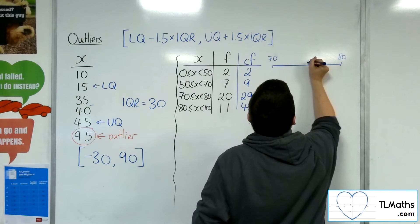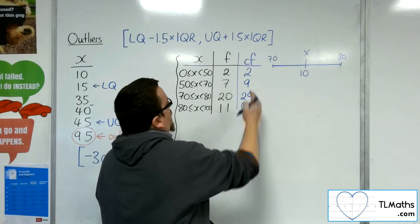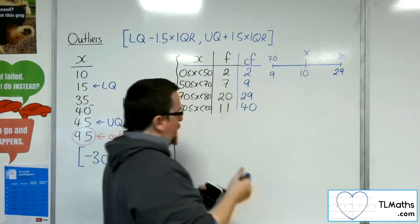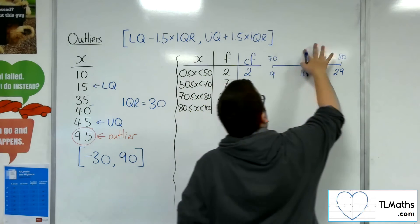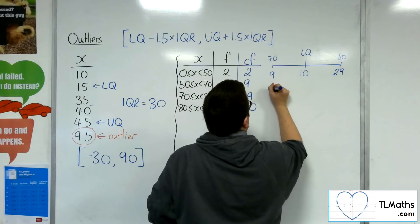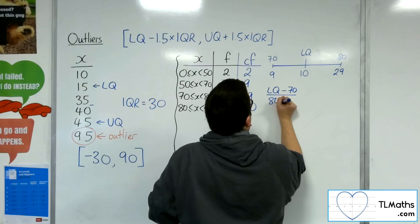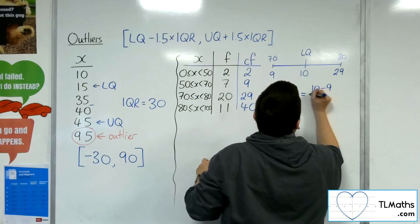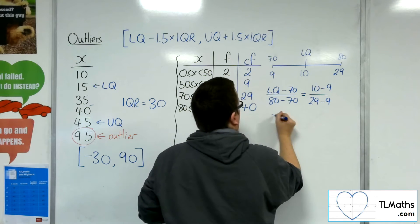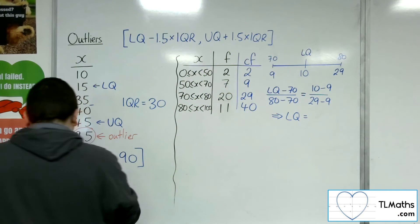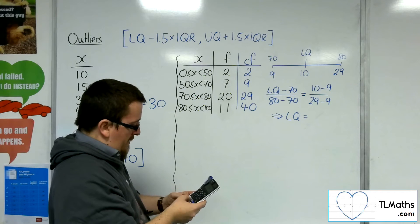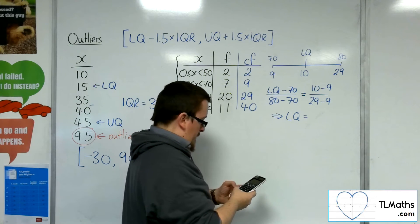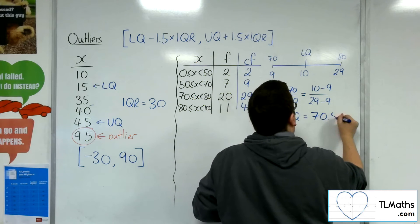Somewhere between 70 and 80 is the 10th value. By the time I get to 70, I've gone through 9 data points, and by the time I reach 80, I've gone through 29 data points. So the lower quartile can be found by linear interpolation: (Q1 − 70) / (80 − 70) = (10 − 9) / (29 − 9), which is 1/20. Multiplying up by 10 and adding 70 gives Q1 = 70.5.